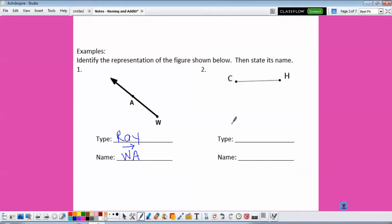Here because it has no arrows, we know it's a line segment. We could either name it line segment CH or it could be line segment HC.